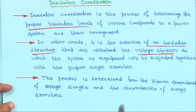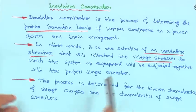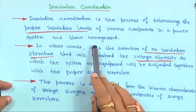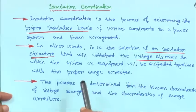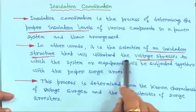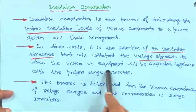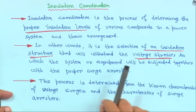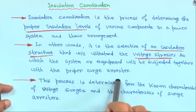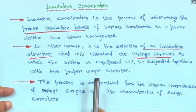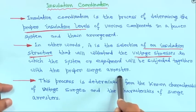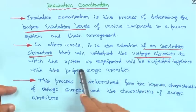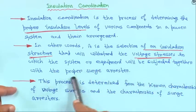Insulation coordination is the process of determining the proper insulation level of various components in a power system and their arrangement. In other words, it is the selection of an insulation structure that will withstand the voltage stresses to which the system or equipment will be subjected, together with the proper surge arrestor.